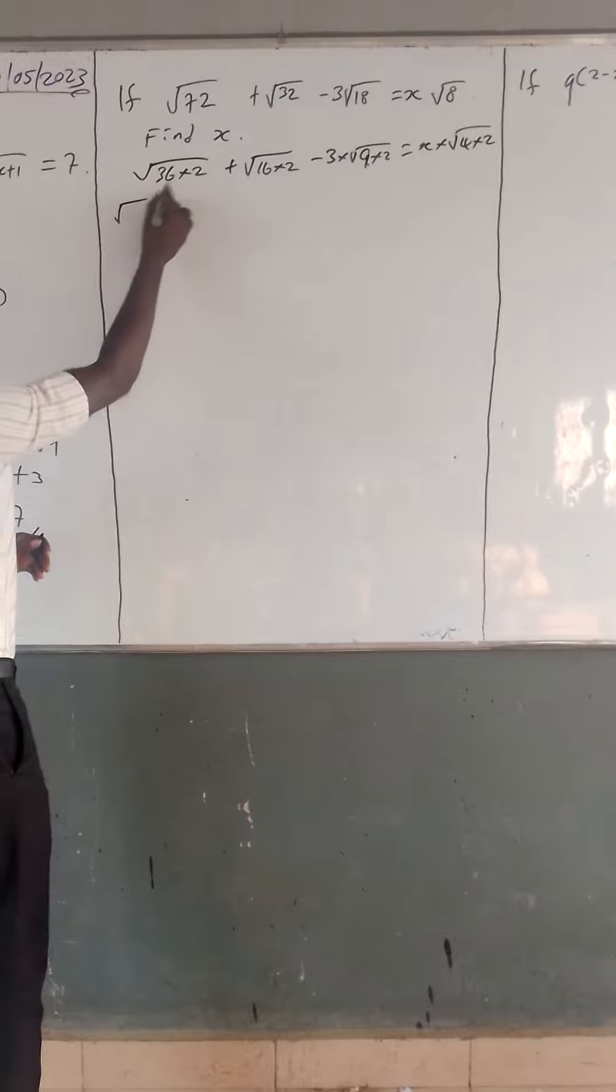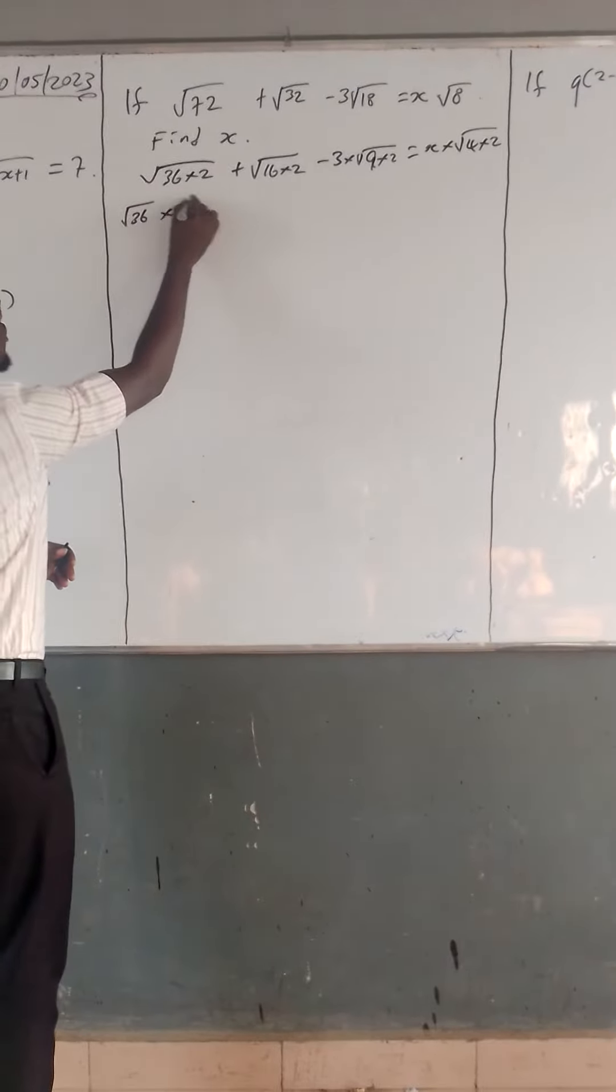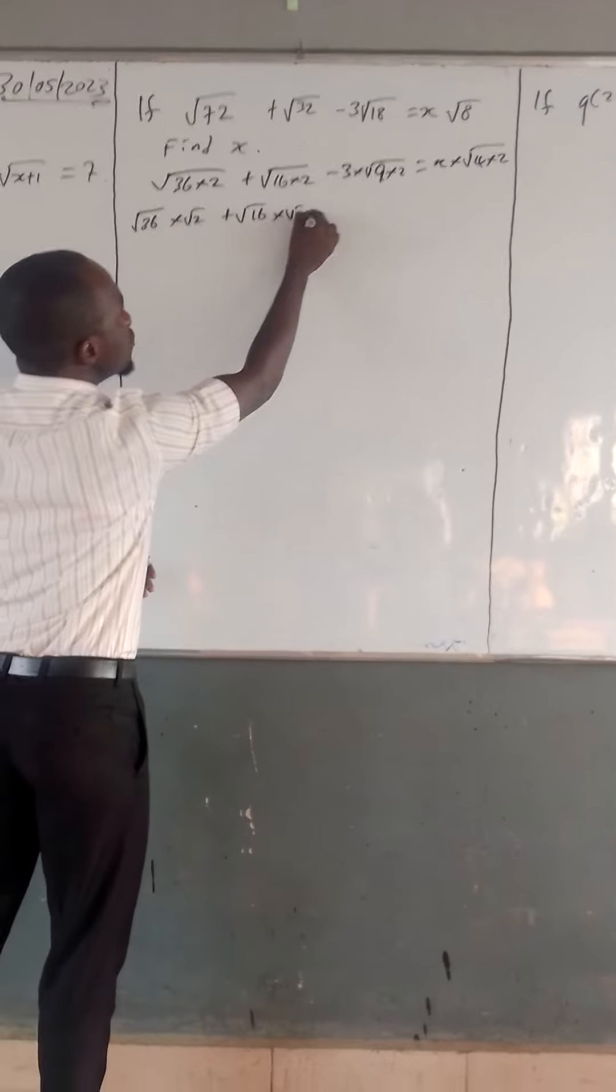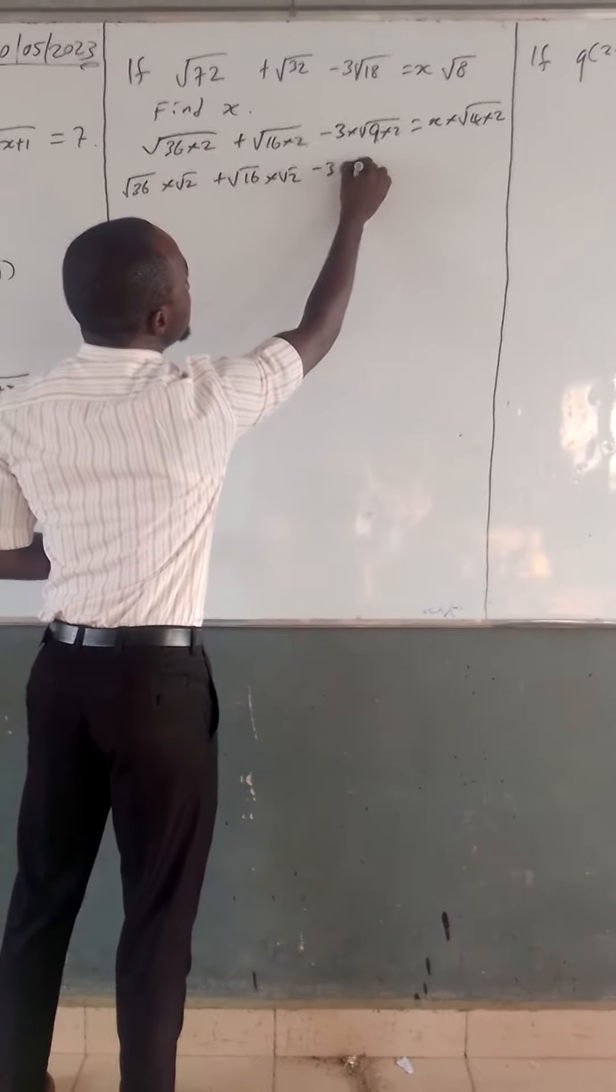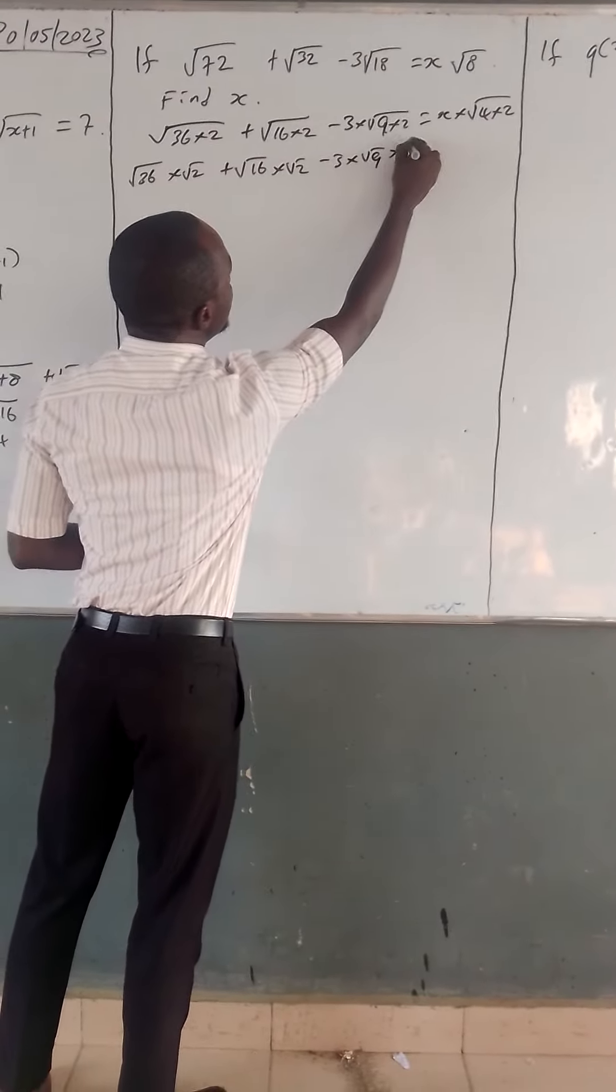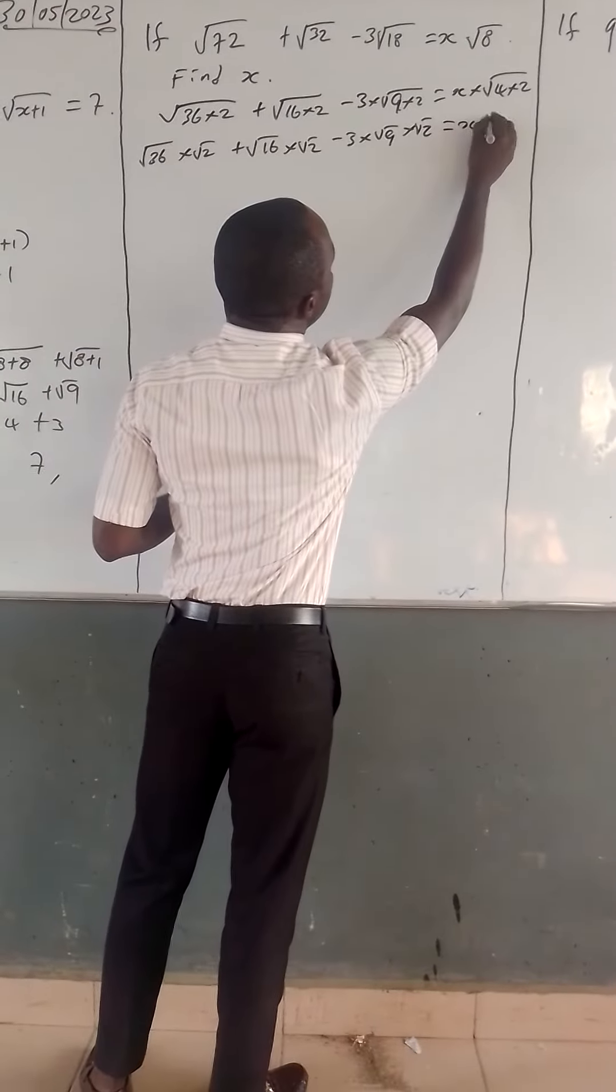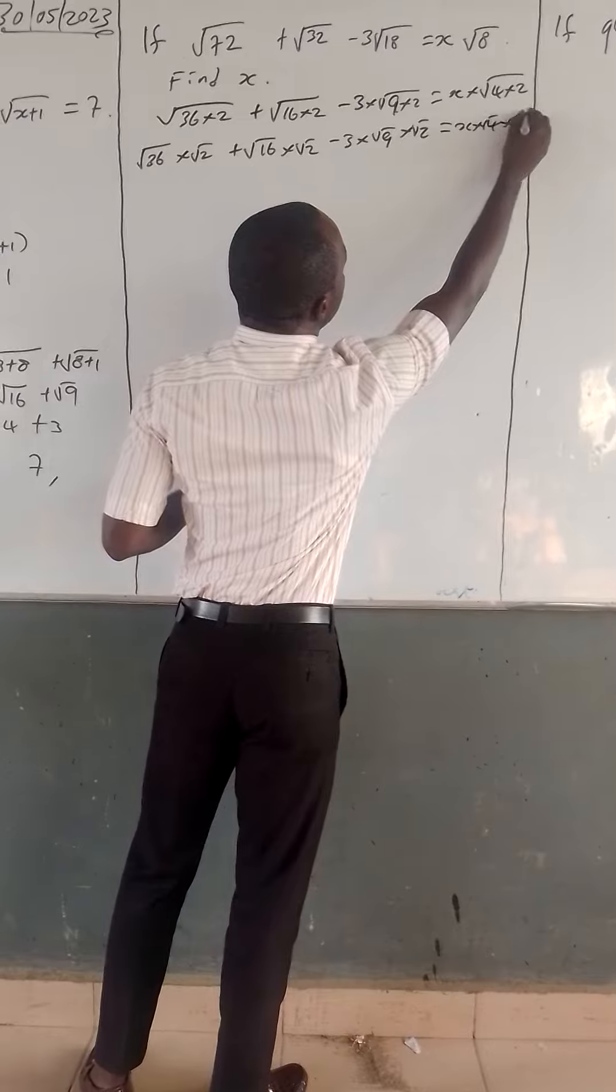So we have square root of 36 times root 2, square root of 16 times root 2, minus 3 times square root of 9 times square root of 2. We break this, so this is equal to x times square root of 4 times square root of 2.